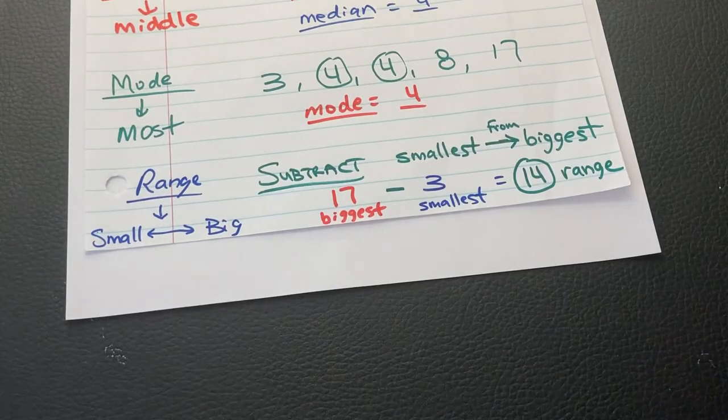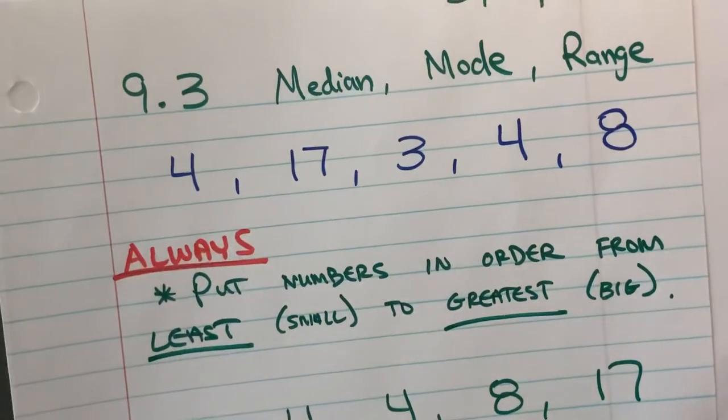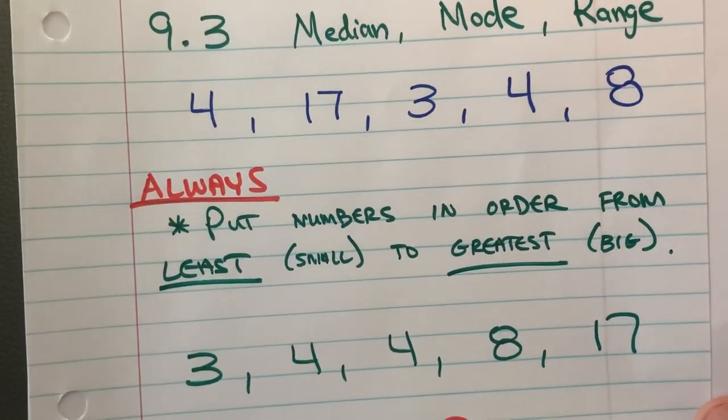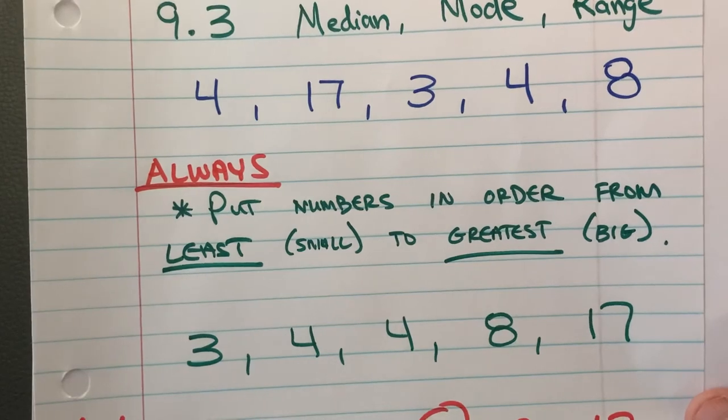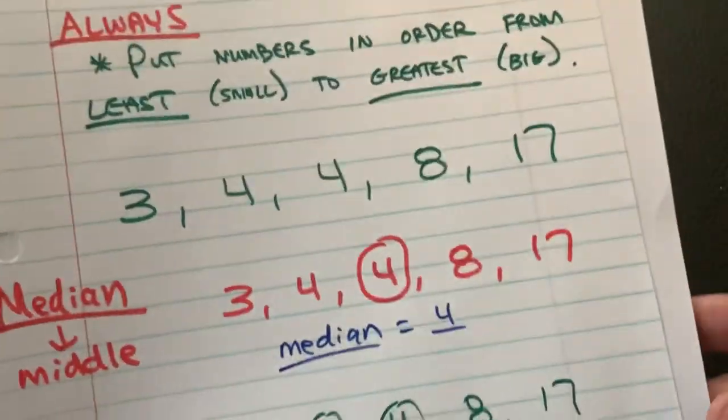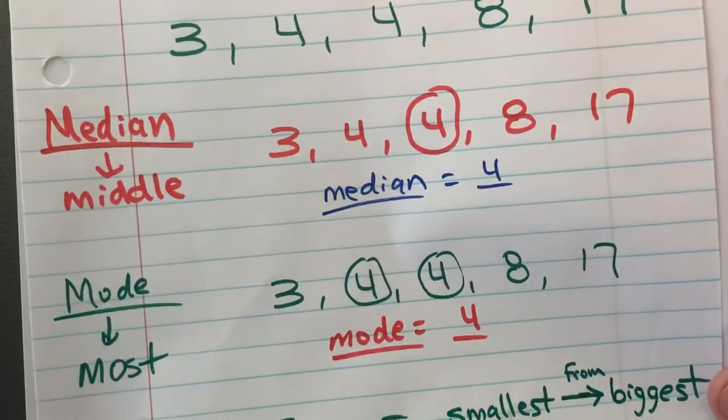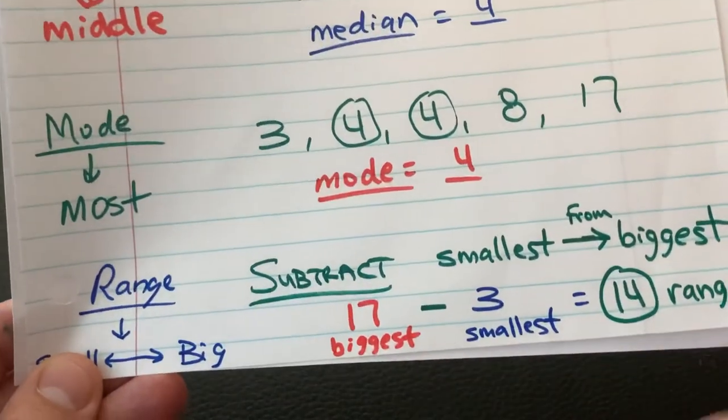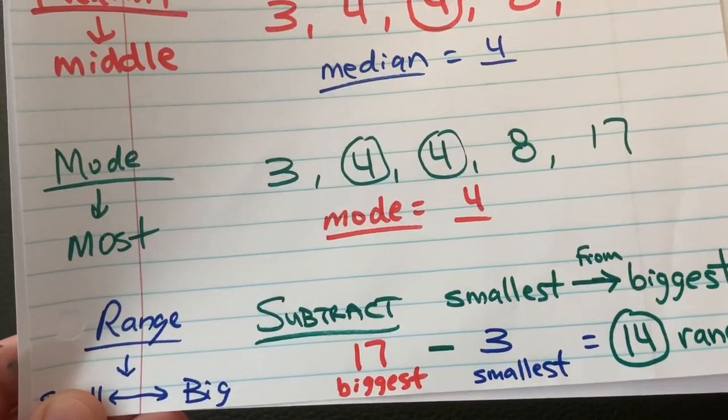In your Google Doc, it's going to give you a group of numbers that are not in order. Your first job is to always put them from smallest to biggest. Remember, pause this video to help you. After you do that, the median is the number in the middle. The mode is the number that you see the most. The range is subtracting biggest from smallest. Hope this video helped you. See you next time.